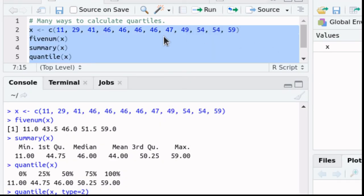When we run this script we see the results of some of these functions. For example the five number summary just lists the five numbers that are in the five number summary. Eleven is the minimum value. 43.5 is what it estimates to be Q1. 46 is its estimate for the median. 51.5 is Q3 and 59 is the maximum.